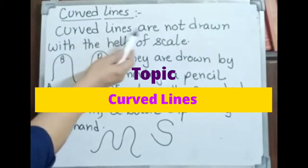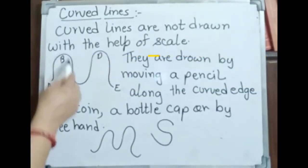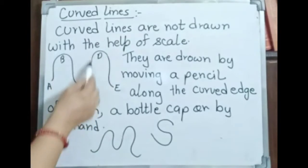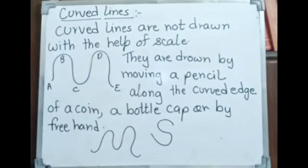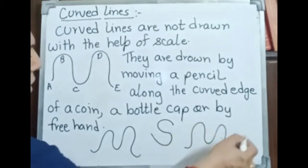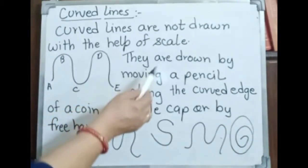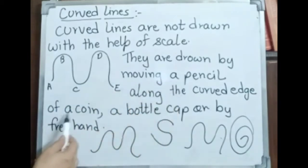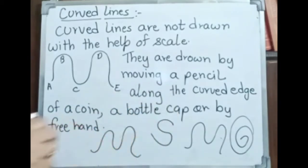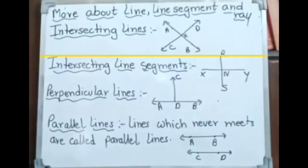Curved lines are not drawn with the help of a scale. These are curved lines — A, B, C, D, E. They are drawn by moving a pencil along curved edges. They are drawn by moving a pencil along the curved edge of a coin, a bottle cap, or by freehand.